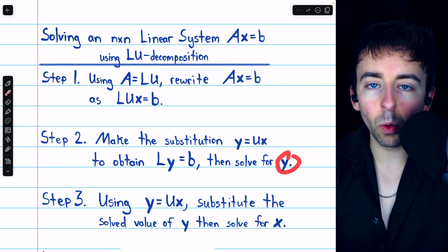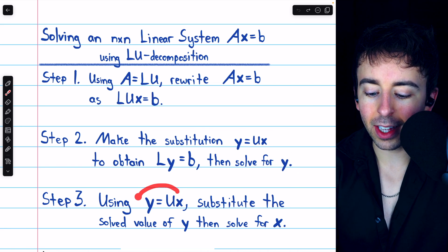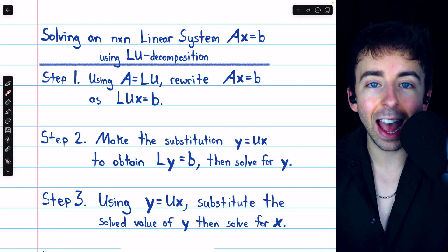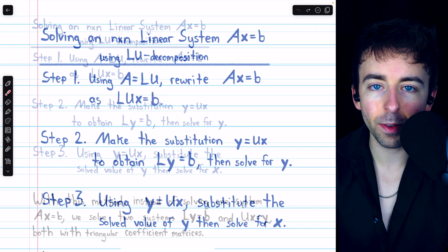Once we know what Y is, we can go back to that equation Y equals U times X and solve this for X, thus solving the system.